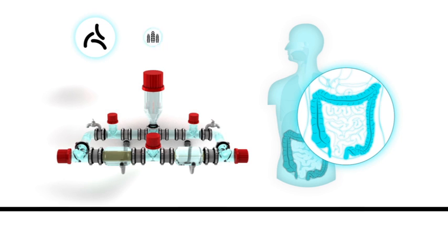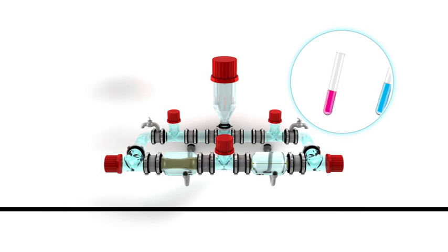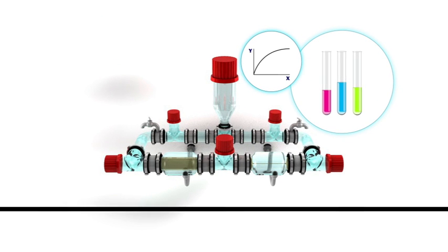These bacteria play a crucial role in the further digestion of the undigested materials from the small intestine. Here in TIM 2, we can measure the interaction of compounds and the microbiota. At all stages, samples can be taken to investigate their composition.